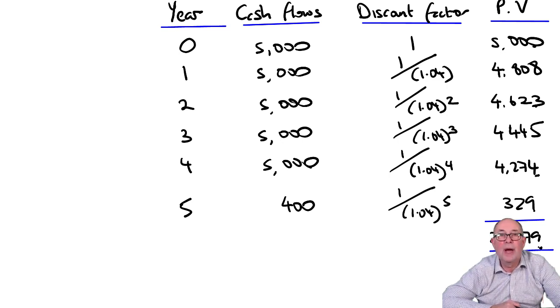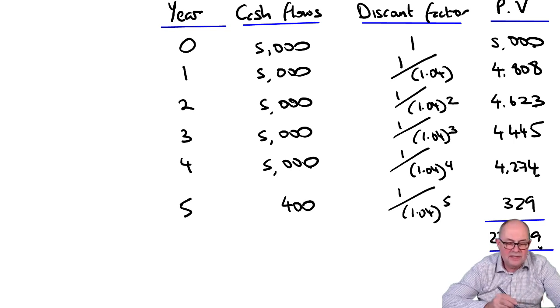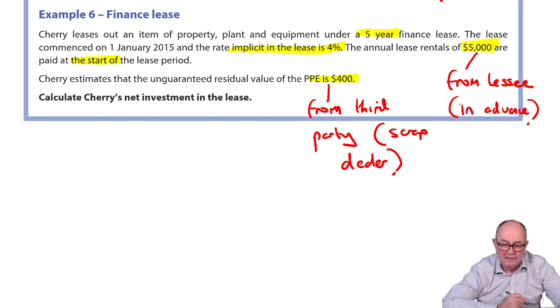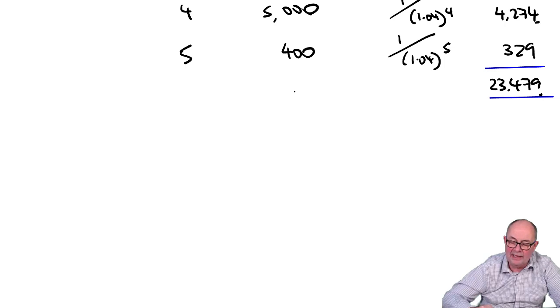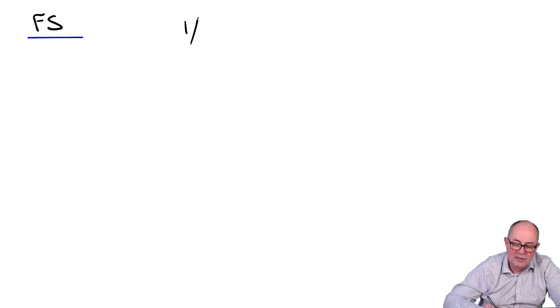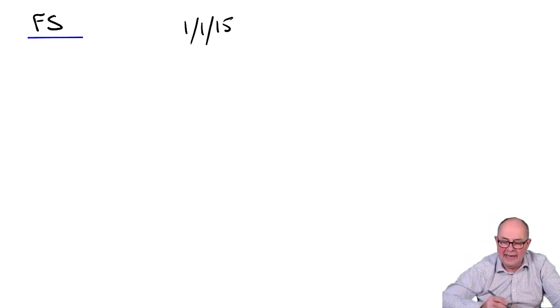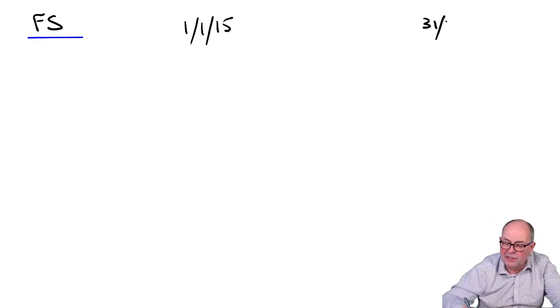But we're saying, well, what goes where in the financial statements? This lease started on the 1st of Jan 15. So, we're going to have a look at some extracts from the financial statements. First of all, on the 1st of Jan 15, and secondly, one year later, on the 31st of December 15.